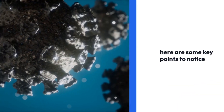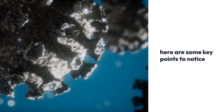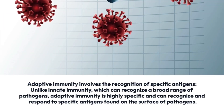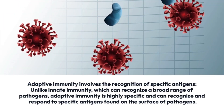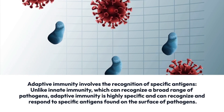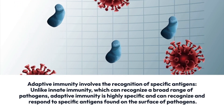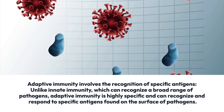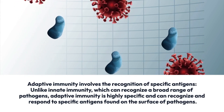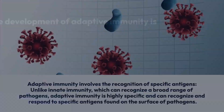Here are some key points to notice. Adaptive immunity involves the recognition of specific antigens. Unlike innate immunity, which can recognize a broad range of pathogens, adaptive immunity is highly specific and can recognize and respond to specific antigens found on the surface of pathogens.